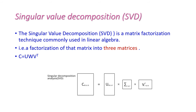The next one is Singular Value Decomposition, otherwise called SVD. SVD is a Matrix Factorization Technique commonly used in Linear Algebra. A very big matrix is divided into three smaller matrices: C = U · W · V-transpose.